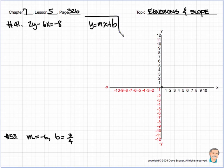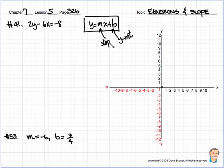Very important equation — slope-intercept form. Why do we call it that? Because there's the slope, and here's the y-intercept. Remember we talked about that y-intercept? That's where it crosses the y-axis, and m is equal to the slope. So let's see if we can use this equation, this formula — y is equal to mx plus b. That's the slope-intercept form of the equation.